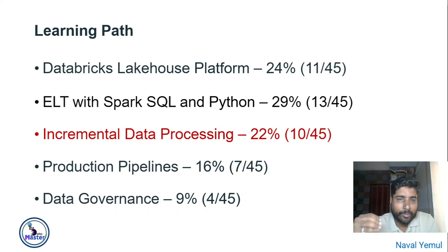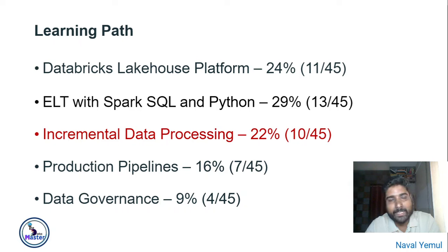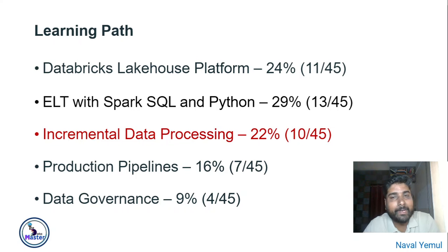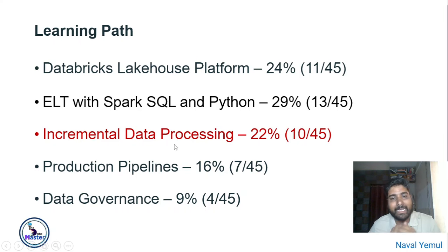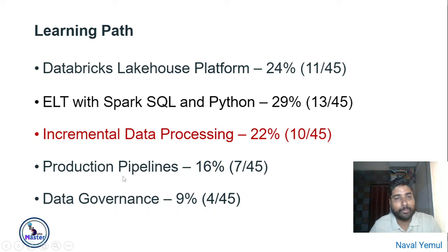I've already prepared videos on Medallion Architecture, so I request you to please watch those. We also need to know what are Bronze, Silver, and Gold tables. Moving further to Delta Live Table — it's a new framework and I have already prepared a video on it, which I strongly recommend watching. Delta Live Table is divided across two parts of this series: I'll cover some here in part three and the rest in part four, which covers production pipeline and data governance.